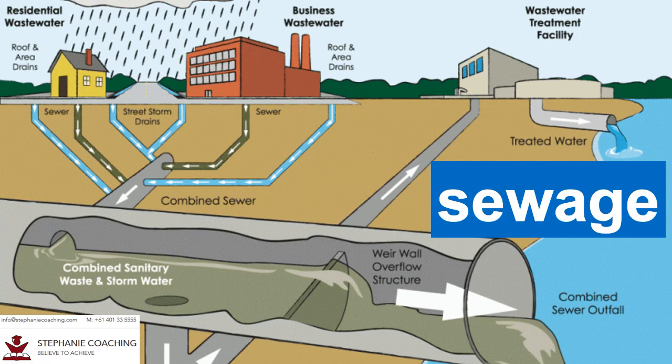Word number twenty-five is sewage. Sewage is the waste water produced from a community of people. It contains dirty water from toilets, sinks, tubs, showers, dishwashers, and anything we flush away. If we don't treat sewage, it will become water pollution.